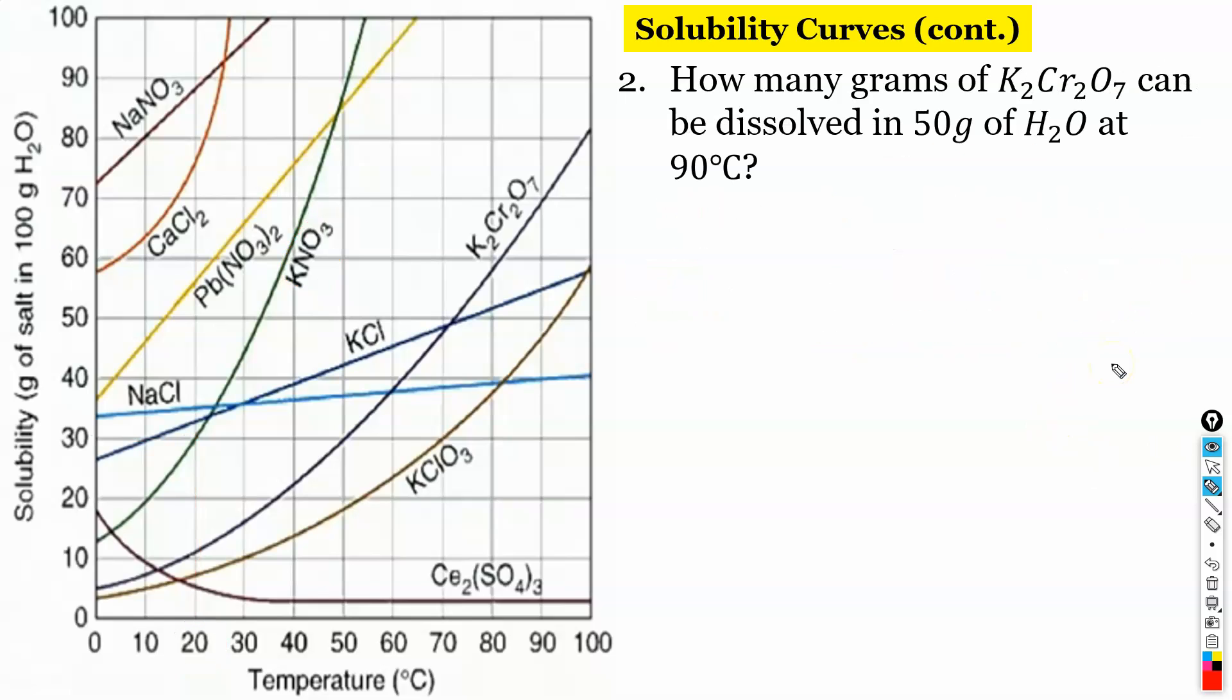How many grams of K2Cr2O7 can be dissolved in 50 grams of H2O at 90 degrees? Well again here's the problem. We have 100 grams on our graph and it's asking about 50. So just like we did in our previous example when we have twice the amount of water we double it. If we have half the amount of water we halve it.